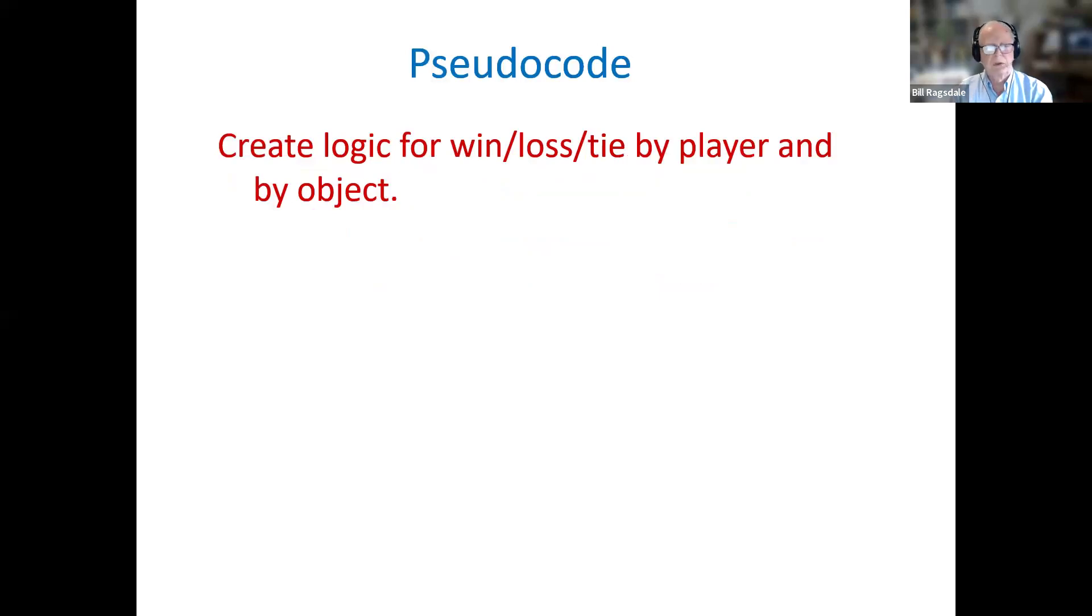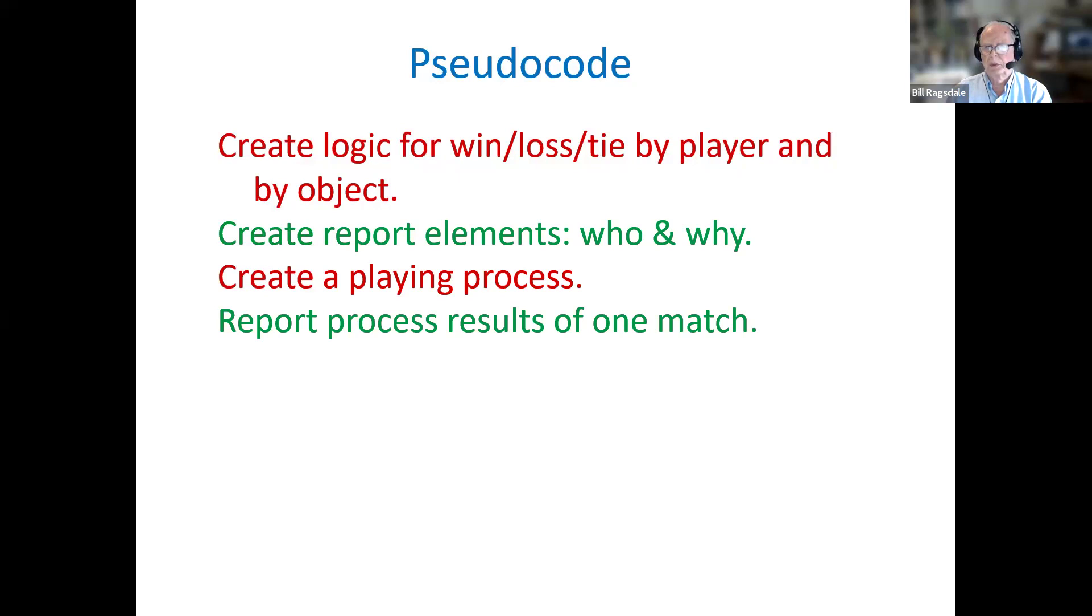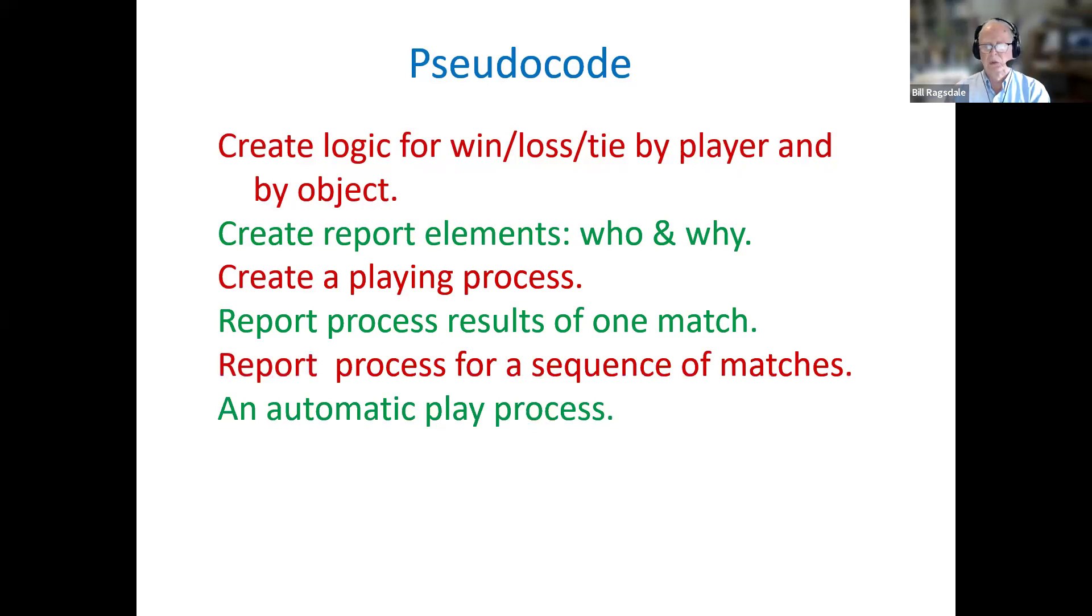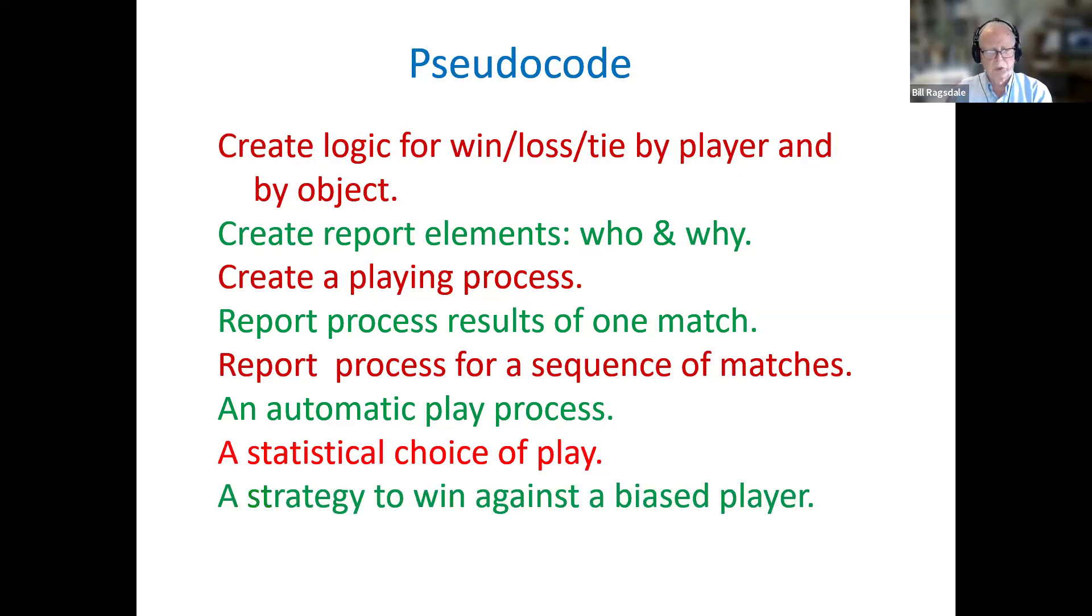So our code for this is first we go into the logic for the win-loss tie. And that's, of course, based on that decision matrix that we just saw. We then will create some very simple report elements. Who won a given competition and why. And then create an automated playing process, a report process for showing the results for one match. Then a repetitive sequence of matches. This will result in automated play. And then finally, a statistical choice of a place to make, attempting to develop a strategy to win against a biased player. And the key here is a biased player. If both players are strictly at random, then all the win-loss records will be random. But the goal is to find a biased player and then play against them.